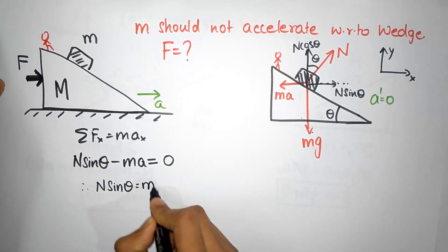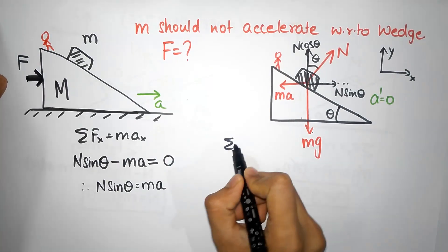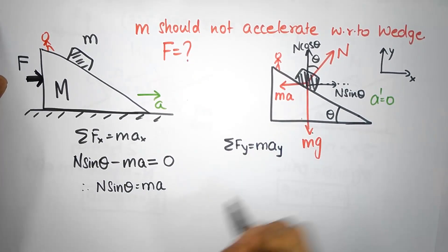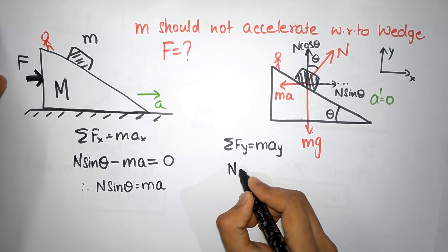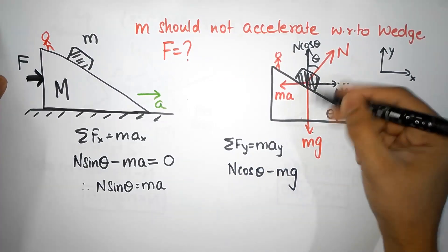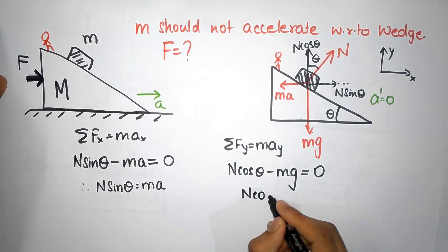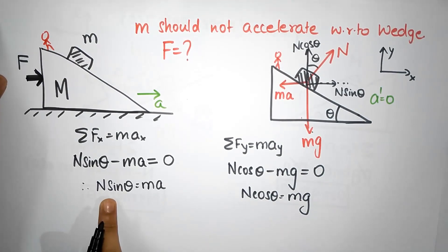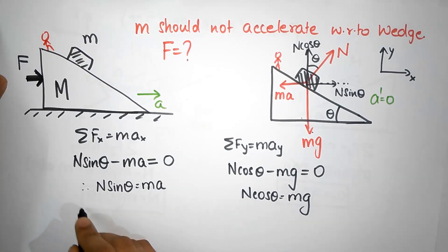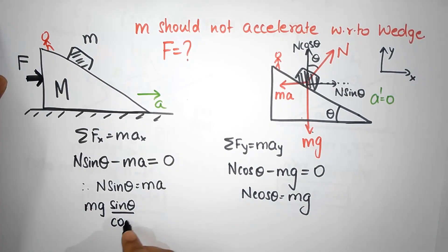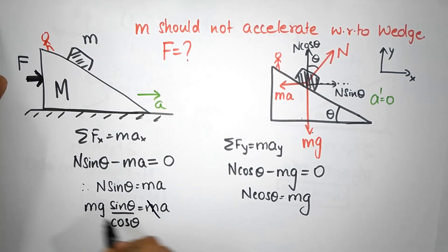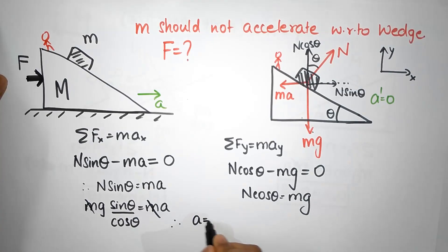Similarly, Newton's second law in the Y direction gives N cos theta minus mg equals zero. So N cos theta equals mg, meaning N equals mg divided by cos theta. Substituting into N sin theta equals ma, we get mg tan theta equals ma. Mass cancels, so the acceleration must equal g tan theta.